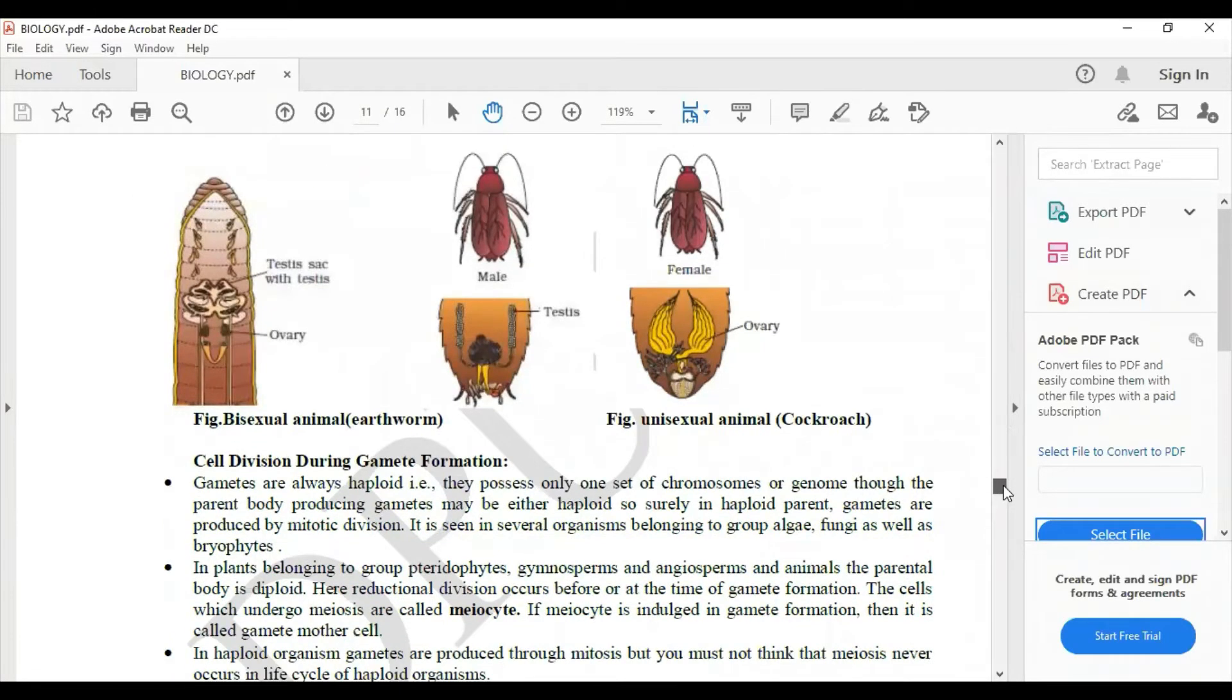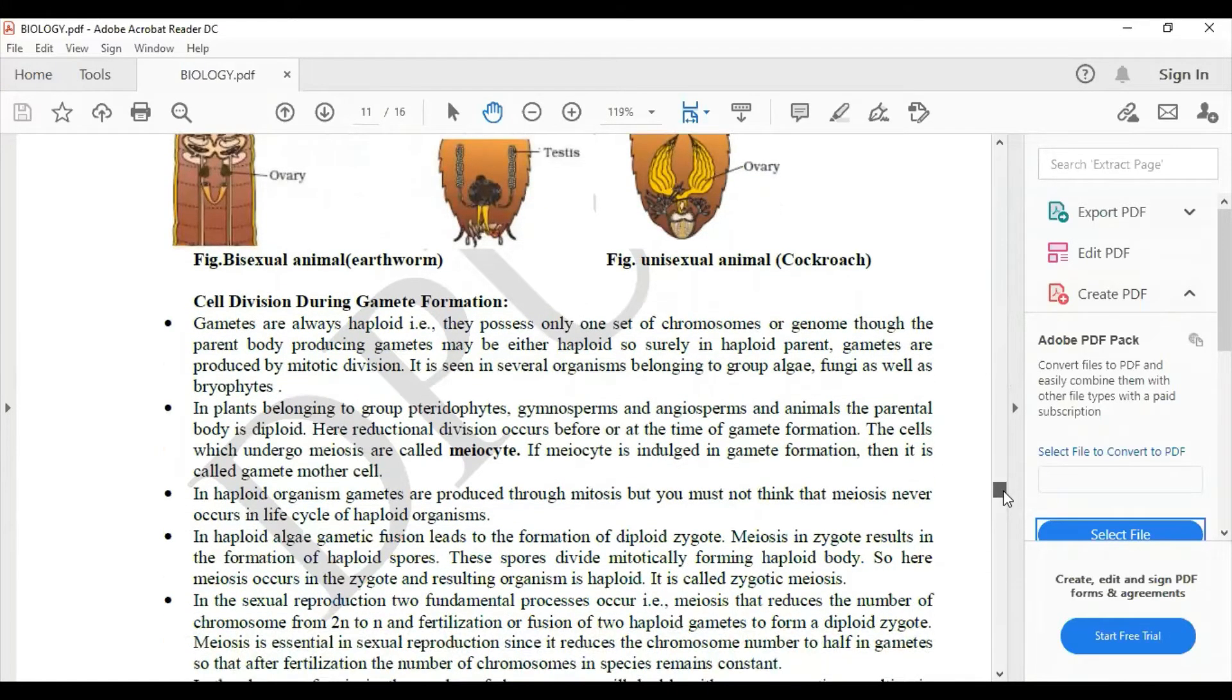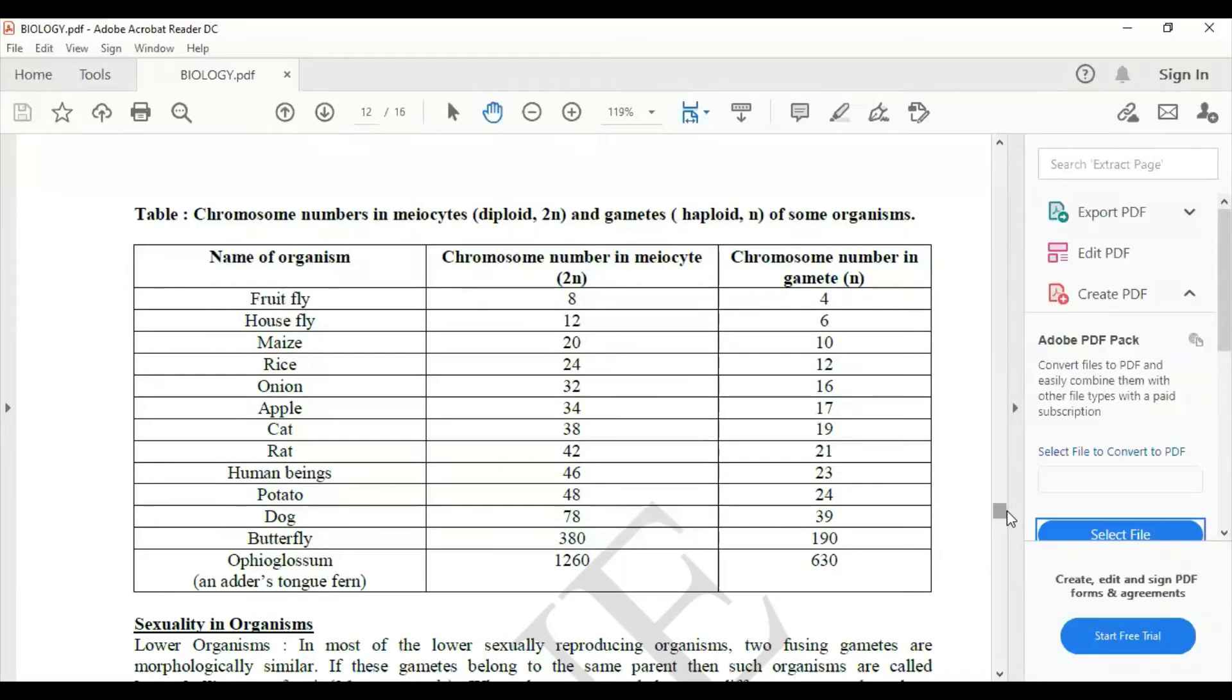And then moving on to the bisexual animal and unisexual animal - earthworm is bisexual, unisexual is cockroach. Cell division during gamete formation has also been explained here.